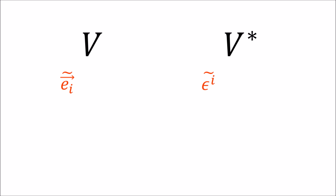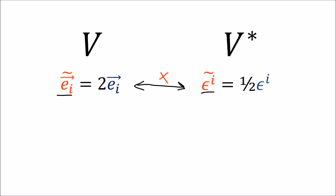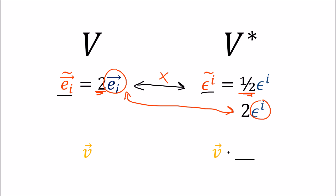The first correspondence was kind of ugly: vector co-vector partners might look nice in one basis, but a change of basis breaks things because growing the vectors causes the co-vectors to shrink. This new correspondence — partnering vector v with the co-vector v dot something — doesn't depend on a basis at all, so we don't run into problems when we change basis. Moreover, when we scale the vector by two, we also scale its co-vector partner by two, so they always grow and shrink by the same amount.